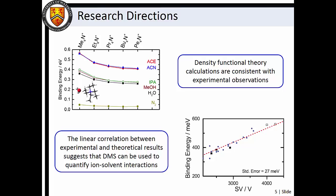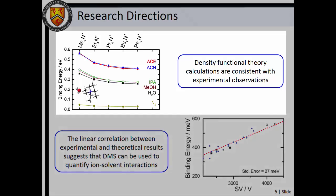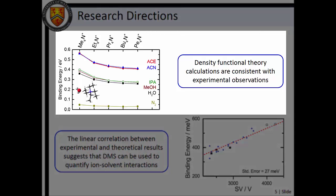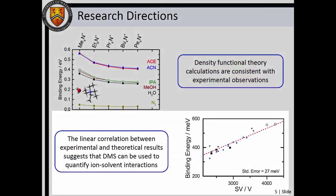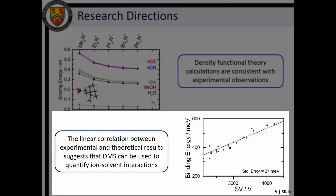The observed trends in ion-solvent binding energies as a function of solvent and alkyl chain length are reproduced by high-level quantum chemical calculations. Moreover, if we plot our calculated binding energies against the SV at CV minimum, we see a strong positive correlation.